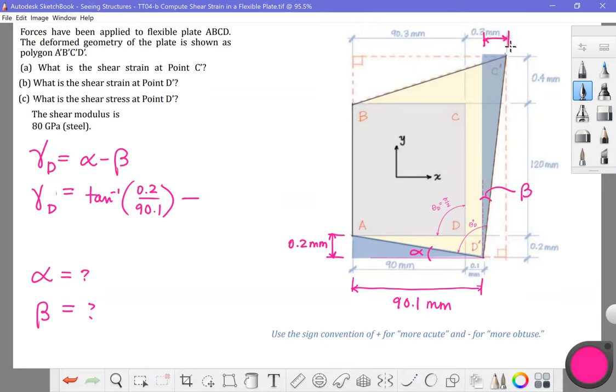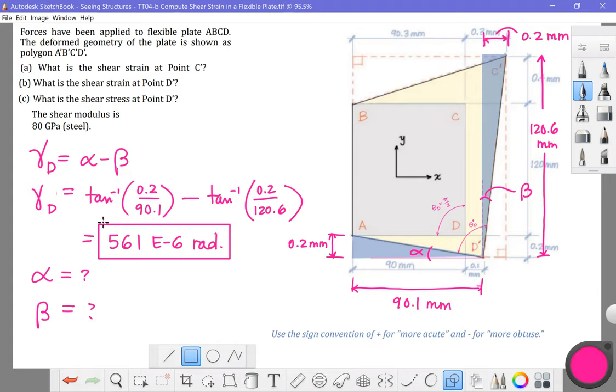So this triangle has this little base that would be 0.3 millimeters minus 0.1 millimeters equals 0.2 millimeters. And the base of that triangle is 120 plus 0.4 plus 0.2. That adds up to a total of 120.6 millimeters for the total height of that triangle. So for beta, I want to do inverse tangent. The opposite to beta is 0.2. The adjacent to beta is 120.6. It's a ratio. The millimeters cancel out. Work through in your calculator and you should get 561 E minus 6 radians. Teeny, teeny, tiny little angle. Or teeny, teeny, tiny little shear strain. A better way to say that. And that's the answer that you should get for point D.